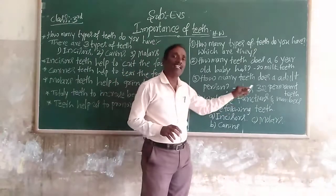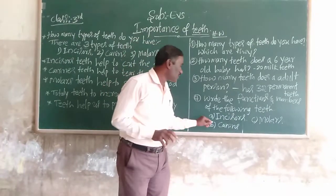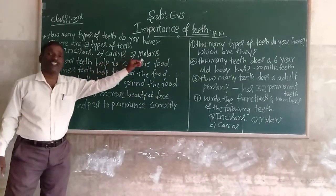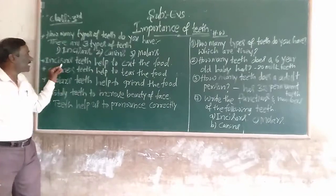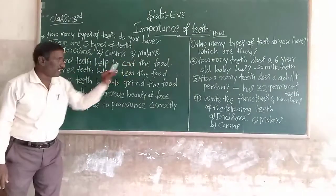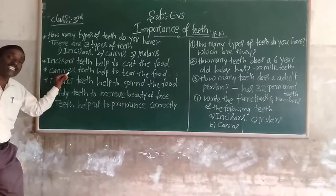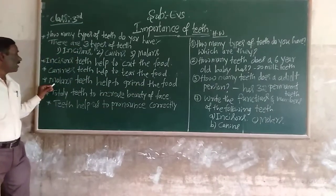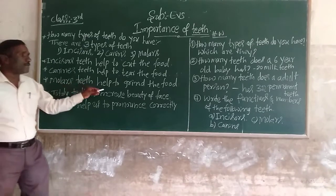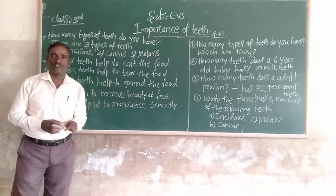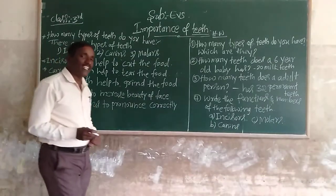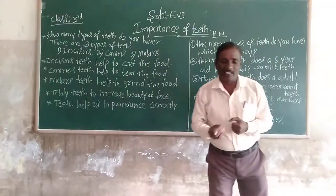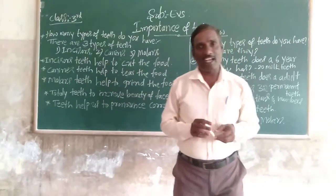Write the functions and numbers of the following teeth. First one — incisor teeth help to cut the food. Canine teeth help to tear the food. Molar teeth help to grind the food. Teeth also increase the beauty of the face, and teeth help us to pronounce correctly. Okay, understand?